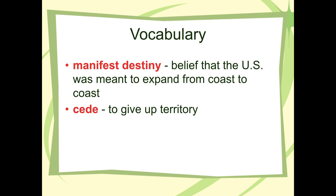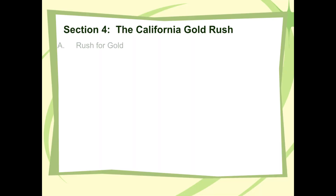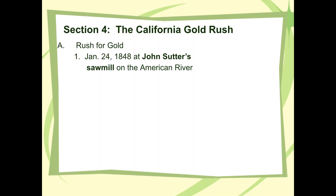We got the manifest destiny thing done. A 'cede' means to give — so Mexico cedes to us New Mexico, Arizona, and California; they give it to us. Well, we sort of took it and then they gave it to us. Alright, let's talk Gold Rush a little bit — this is a good story.